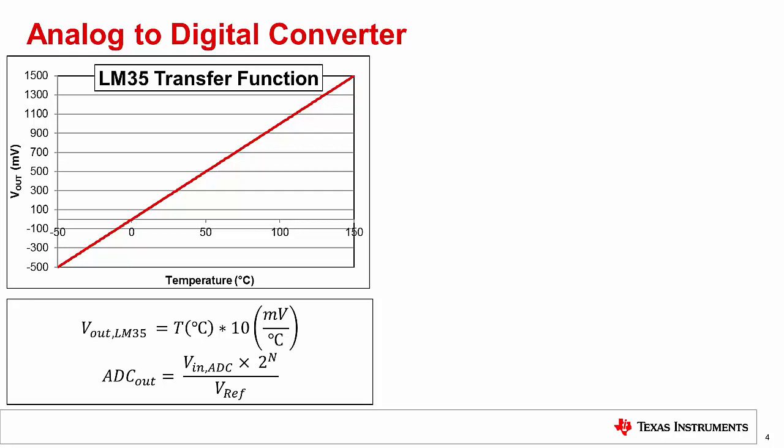The equation shown below the LM35 transfer function describes the relationship between the input voltage and the digital output of our ADC. Note that the quantity N in the equation is the resolution of the ADC in bits. The Arduino Uno has a 10-bit ADC, so for us today, this number is 10.